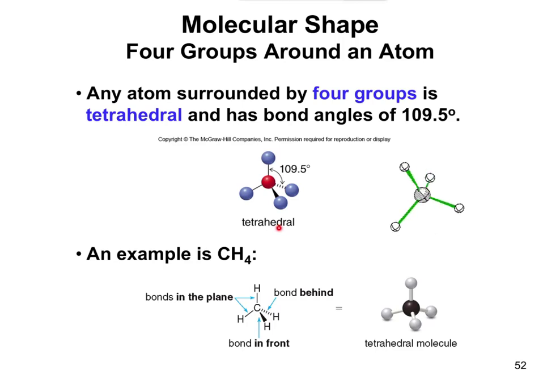This one comes out of the screen towards you, and this one goes out behind you. So this one goes behind you and to the side, this one's out in front and to the side. The goal is to get those four things as far away from each other as possible. That leads to a tetrahedral molecule with a bond angle of 109.5 degrees.